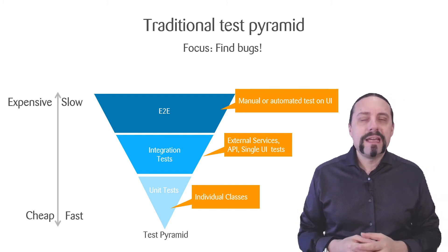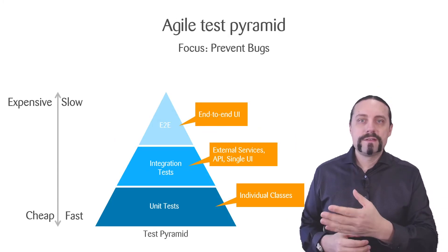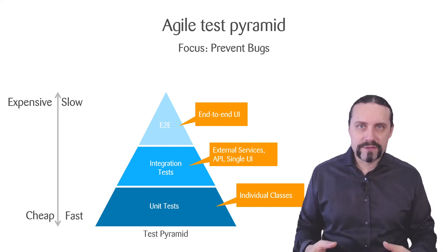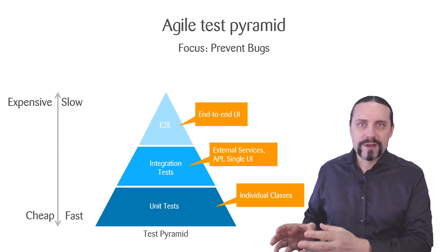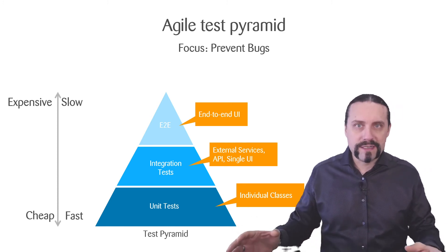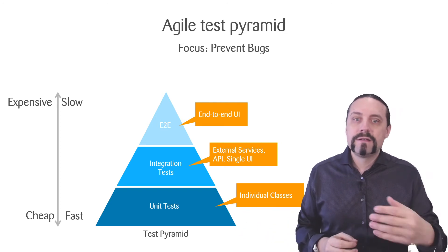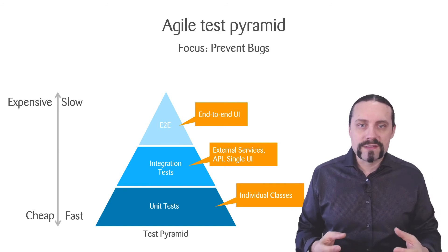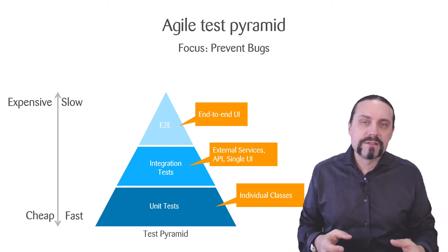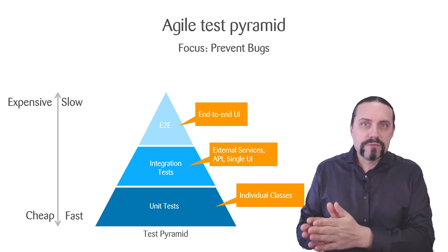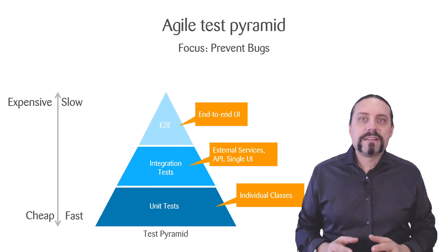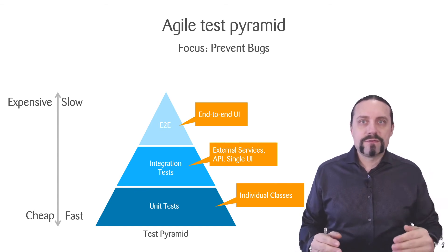Let's see how the agile test pyramid looks. Because we use behaviour-driven development and test-driven development, we always first write a test and then write the functionality. This causes us to have a lot of unit tests and also a lot of integration tests on external services, APIs, and single user interfaces. We only have a few end-to-end tests, preferably automated — more or less smoke tests that go through the process end-to-end. The main focus of the agile test pyramid is to prevent bugs and enable fast feedback.